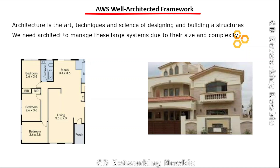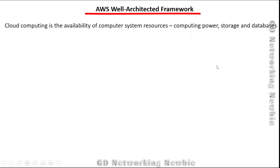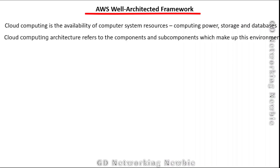Anyway, this architecture and this is the resultant product. Now, if you talk about cloud computing, cloud computing is defined as the availability of computer system resources — and those computer system resources can be computing power, storage, or database. Cloud computing architecture refers to the components and subcomponents which make up this environment.